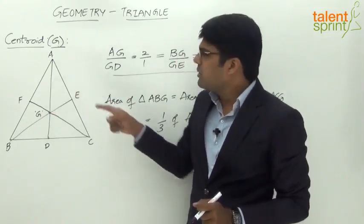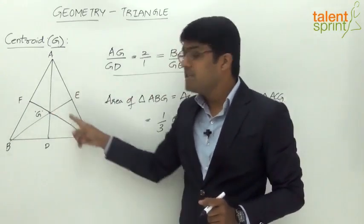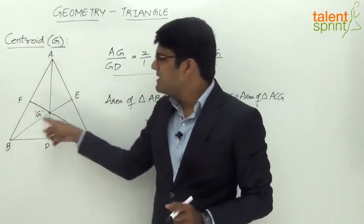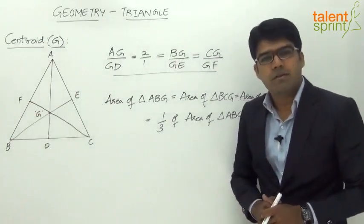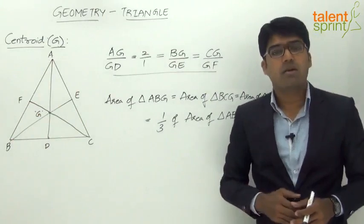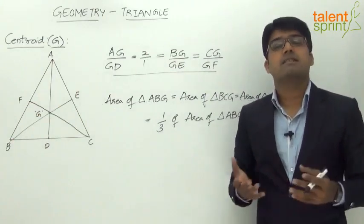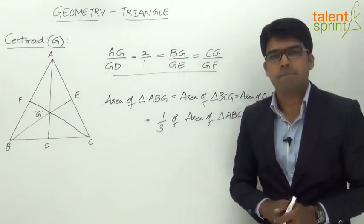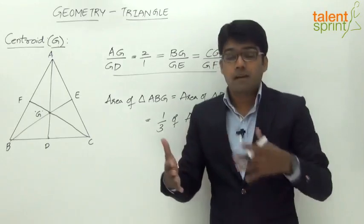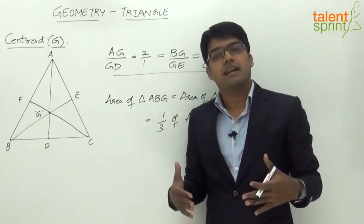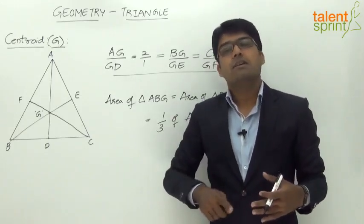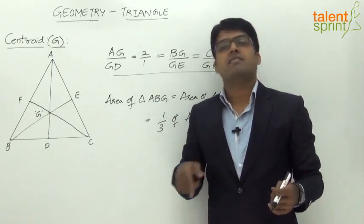Not only ACG — the area of BCG and ABG will also each be 16 square units. This is an important point on which questions can be asked in competitive exams. The area of the triangle formed by any two vertices and the centroid of the triangle equals one third of the area of the original triangle ABC.